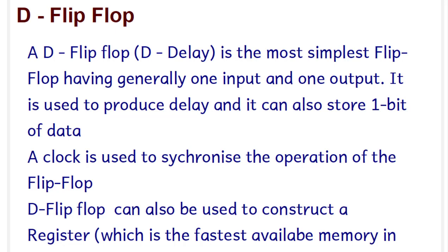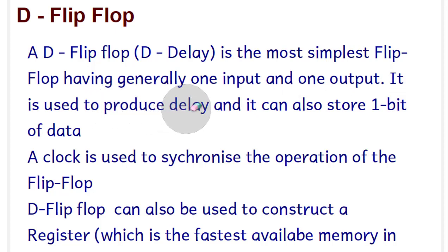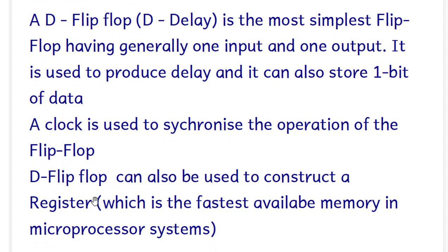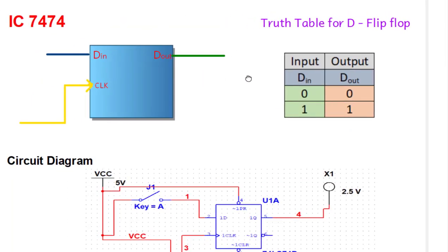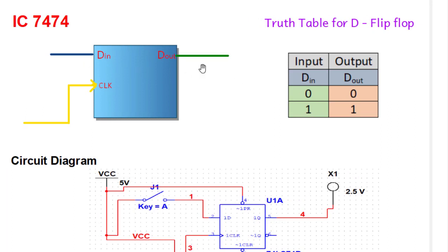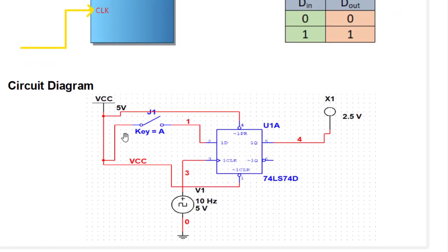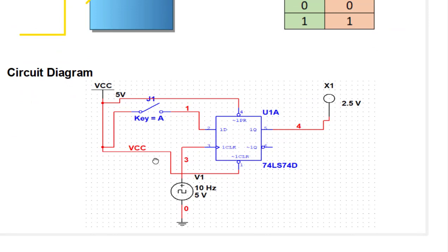Now let us go for the second IC - IC 7474. This is actually a D flip-flop, which is the most simple flip-flop. Generally we just take one input and one output; sometimes two outputs are also available. It is used to produce delay and can store one bit of data. We need a clock to synchronize its operation, and a D flip-flop can be used to construct registers - registers are the fastest available memory in microprocessor systems.